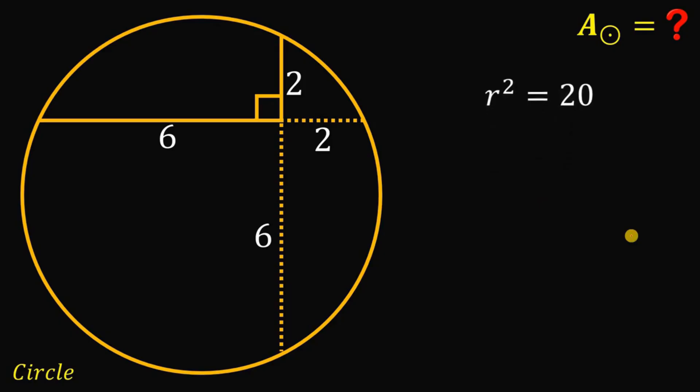And take note that the area of this circle must be equal to pi r squared and we know the value of r squared, this is just 20, so we can replace this with 20. So,